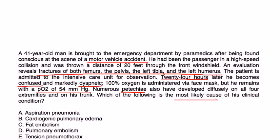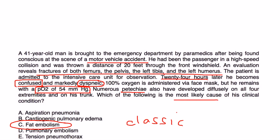This is a classic clinical vignette for fat embolism — usually it doesn't even appear this classic. You've got all three things: dyspnea and hypoxia for respiratory changes, altered mental status and confusion for neurologic changes, and petechiae for the rash. Plus a classic history of fracturing several bones. The fat globules have been released from the bones, obstructing pulmonary vessels, traveling to the brain, and traveling to the skin capillaries.